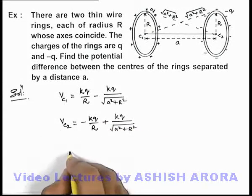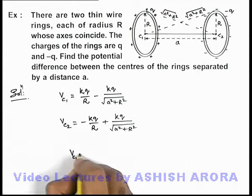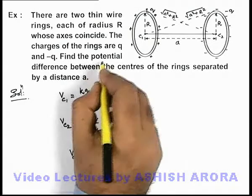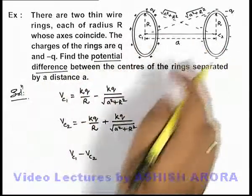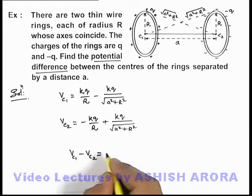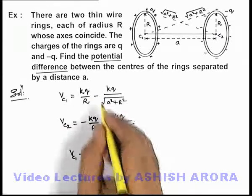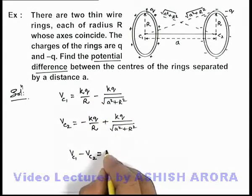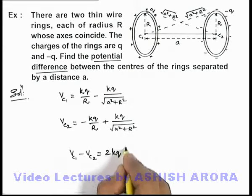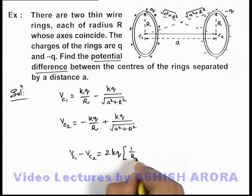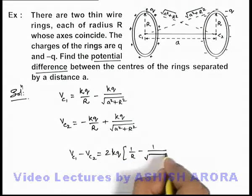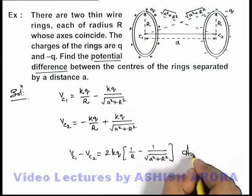And we can directly find out Vc1 minus Vc2, as we are required to find the potential difference between the centers of the rings. If we subtract this by this, we'll directly get the value 2kq times (1 by R minus 1 by root of a² plus R²). That'll be the answer to this problem.